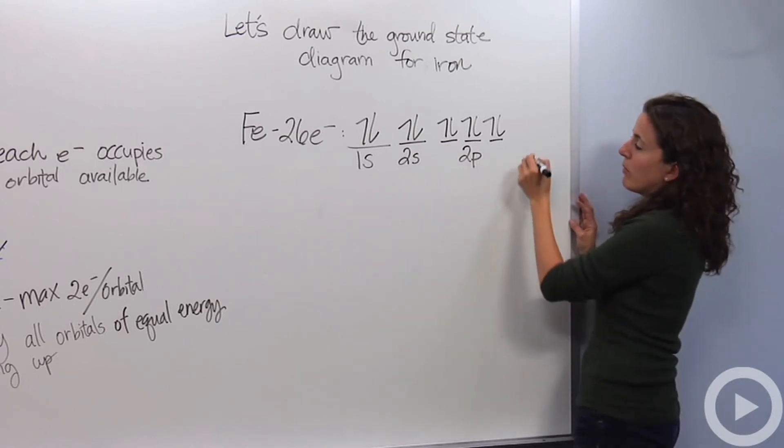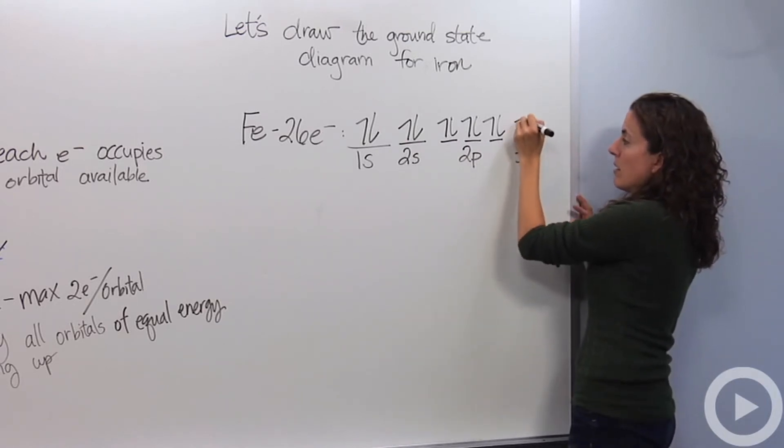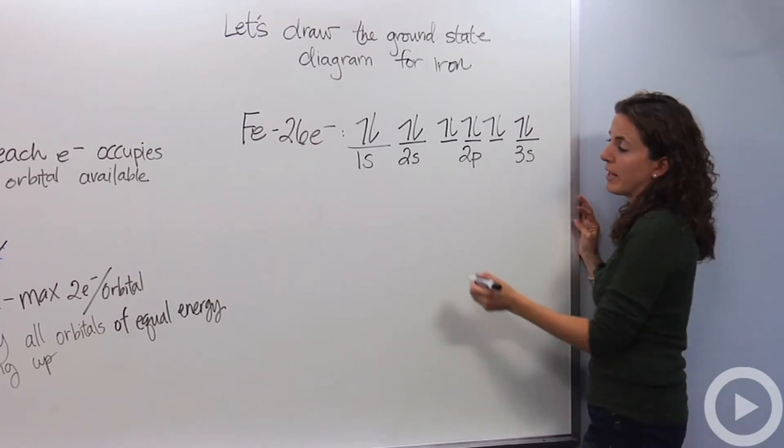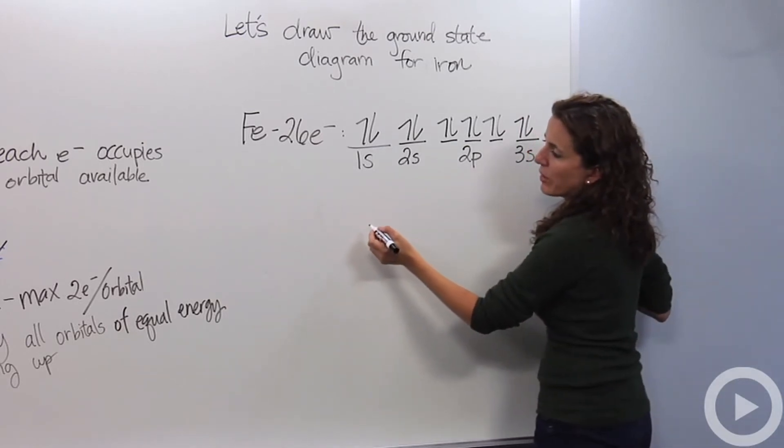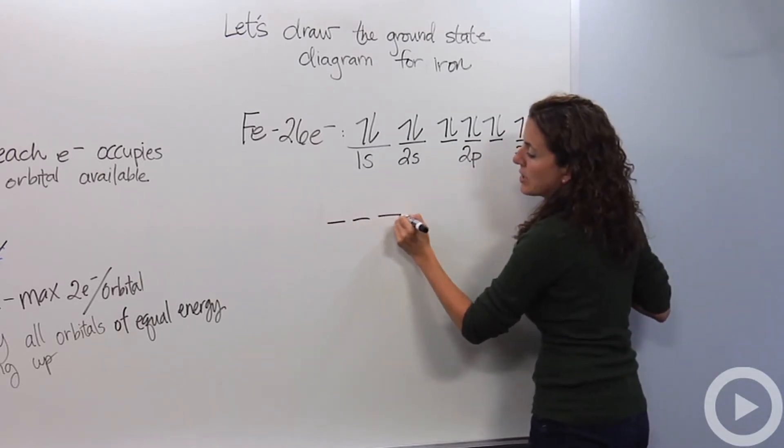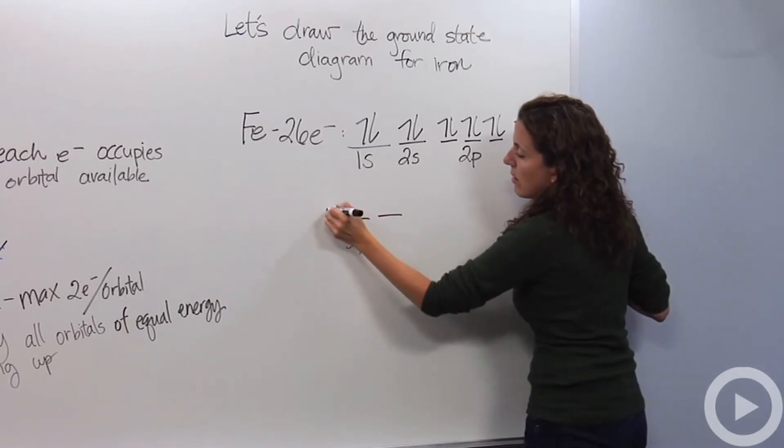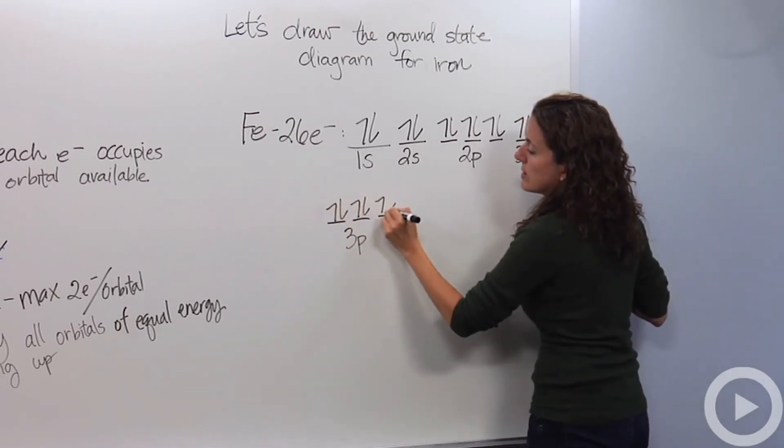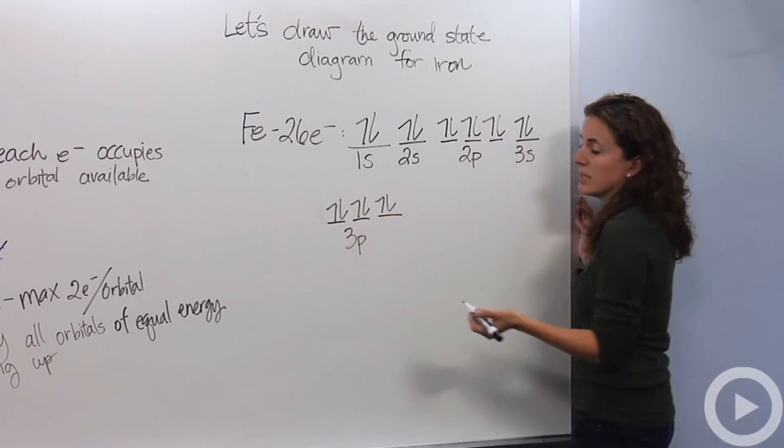After the 2p sub-level we're going to go into the 3s. Two electrons are going to fall into there, making 12. After the 3s we're going to go into the 3p, we're going to draw three dashes. One, two, three, four, five, six, so 12, 14, 16, 18 electrons.